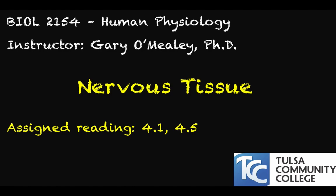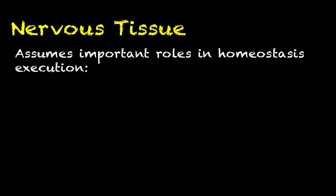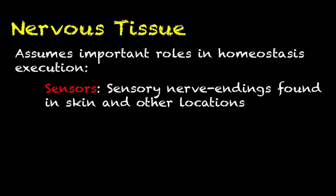Hello everyone, my name is Gary O'Meally and in this video we are going to talk about nervous tissue. Nervous tissue is going to play a lot of different roles in the homeostasis negative feedback loops that we've talked about in previous videos and in all the different physiological scenarios that we're going to be talking about in the future.